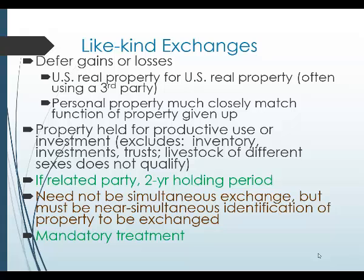So maybe you like a piece of property in Denver, and the people in Denver like a piece of property in New York City, and the people in New York City like a piece of property in Corpus Christi. There can be a three-way exchange and that's fine. At the end of the day, did you end up with some kind of real property in exchange for real property? And if you did, and both pieces are in the United States, you have a like-kind exchange.